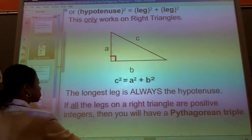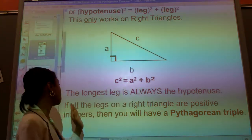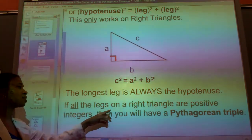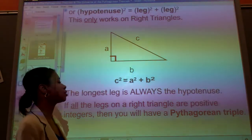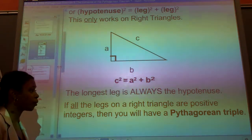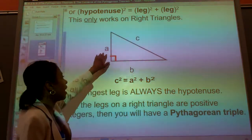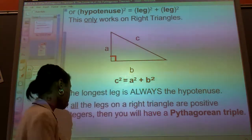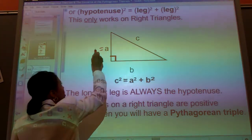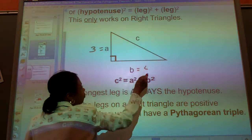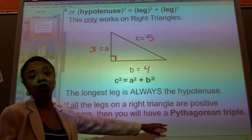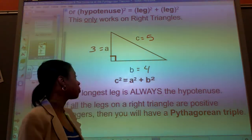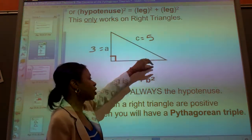So moving further, the longest leg is always the hypotenuse. If all the legs on a right triangle are positive integers, then you will have a Pythagorean triple. So if A, B, and C are all positive values, so if A is equal to 3, B is equal to 4, and C is equal to 5.